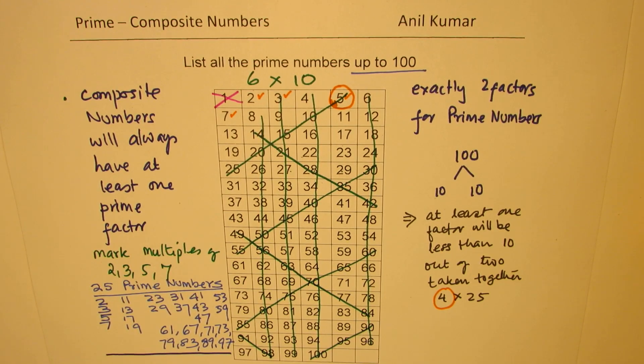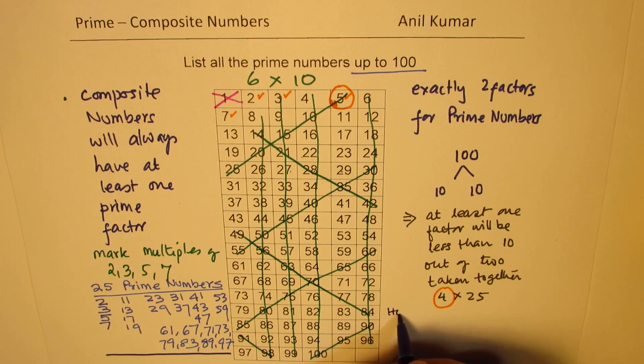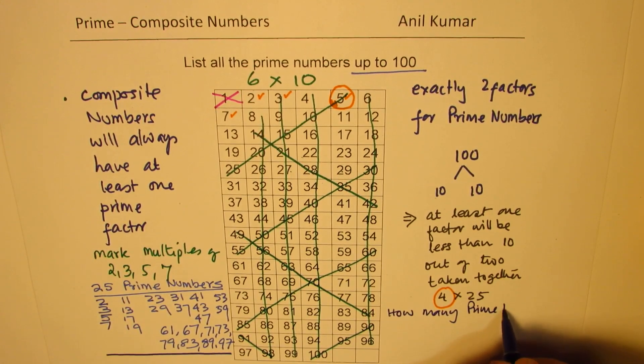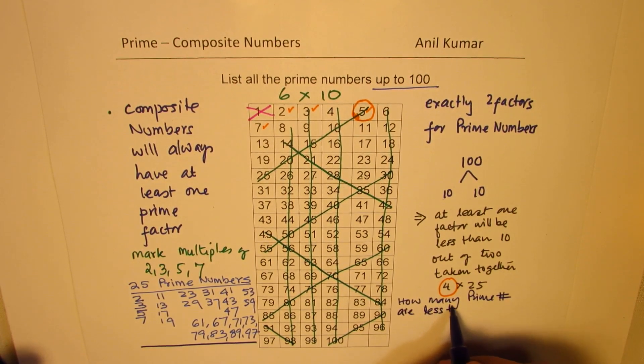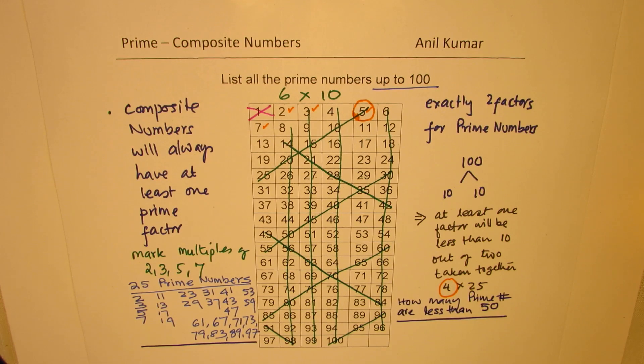Perfect. Now, as an exercise, I would like you to write how many prime numbers are less than 50. You can definitely count and let me know. Write your comments and share with us. I hope you understood and you like it. Thanks for your time and all the best.